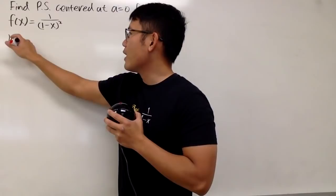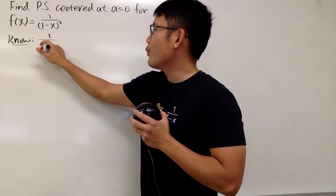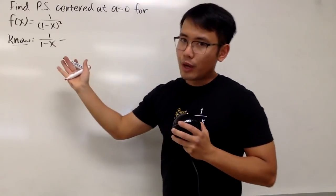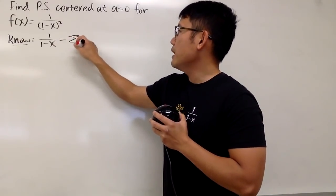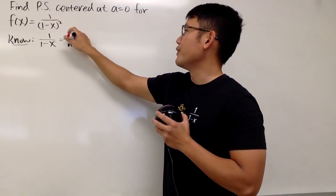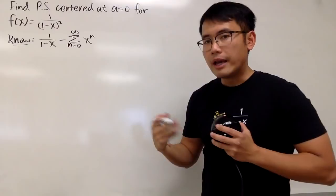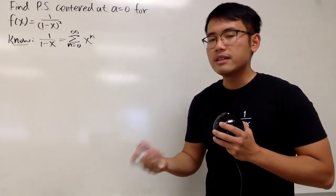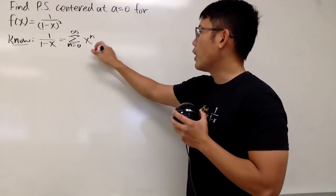First of all, let's write down what we know. Our best friend, 1 over 1-x, this is the sum as n goes from 0 to infinity x to the nth power. And don't forget, we should also give the radius and interval of convergence.